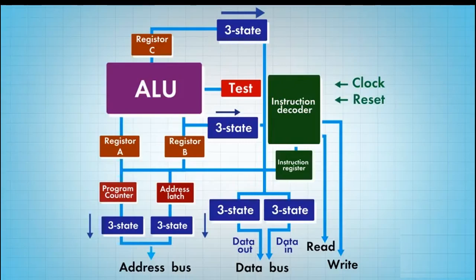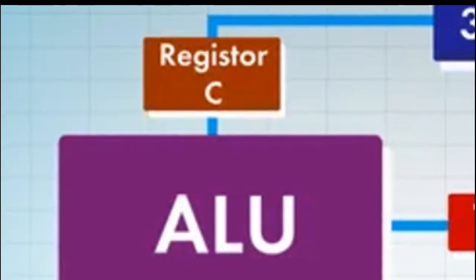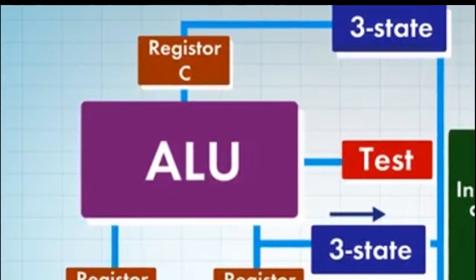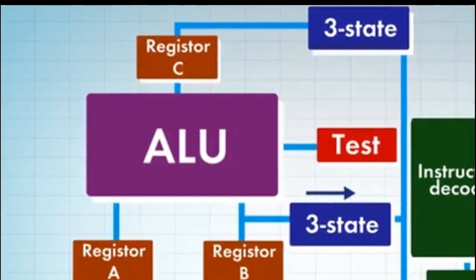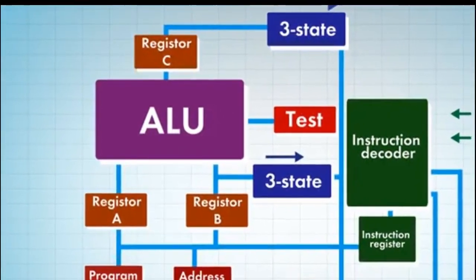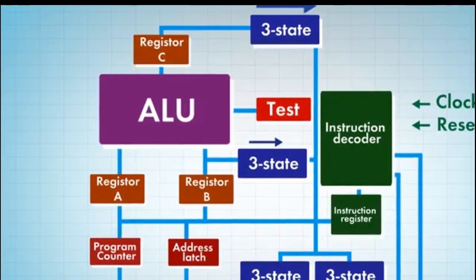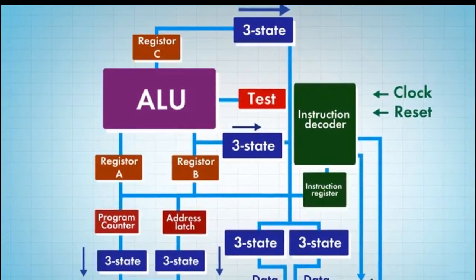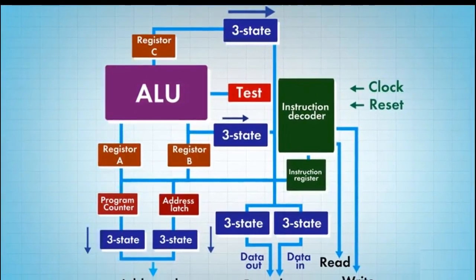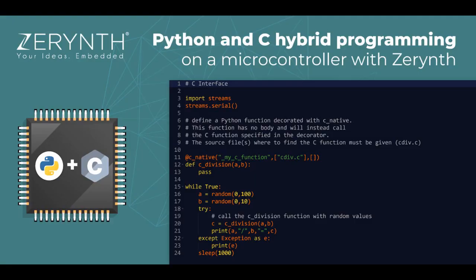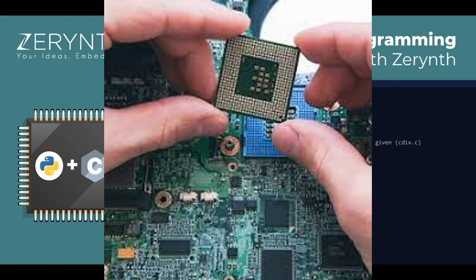A typical microprocessor consists of an arithmetic and logic unit (ALU) in association with a control unit to process instruction execution. Almost all microprocessors are based on the principle of the stored program concept, in which programs or instructions are sequentially stored in memory locations to be executed. To do any task using a microprocessor, it must be programmed by the user, so the programmer must have knowledge of its internal resources, features, and supported instructions.